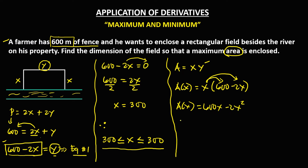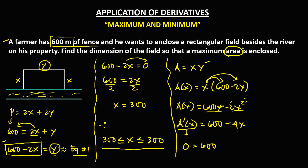To find the derivative, A prime of x: the derivative of 600x is 600, and the derivative of 2x squared uses the power rule — multiply the exponent by the coefficient: 2 times 2 is 4, and reduce the exponent by 1, giving 4x. So A prime of x equals 600 minus 4x. We then set this equal to 0 to find the critical point.